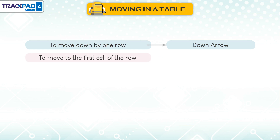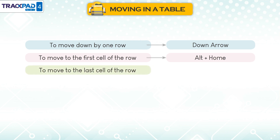To move to the first cell of the row, press Alt plus Home. To move to the last cell of the row, press Alt plus End.